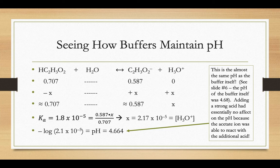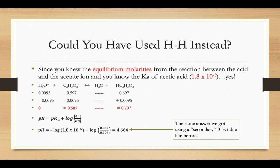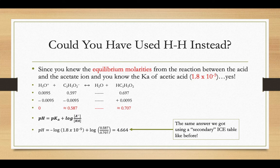So we did learn about the Henderson-Hasselbalch equation. Could we have used the Henderson-Hasselbalch equation to figure out the pH instead? Yeah, you knew the equilibrium molarities from the reaction between the acid and the acetate ion, and you knew the Ka value, so you could have used your Henderson-Hasselbalch equation, and you get the exact same answer as you did before. You just don't need that secondary ICE table to be able to figure it out.